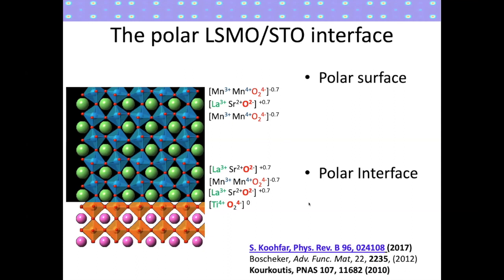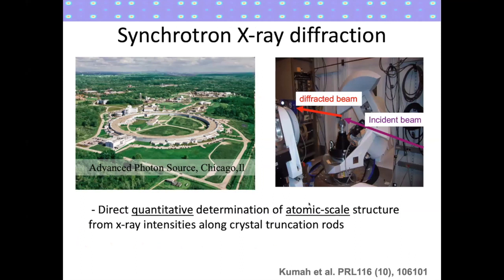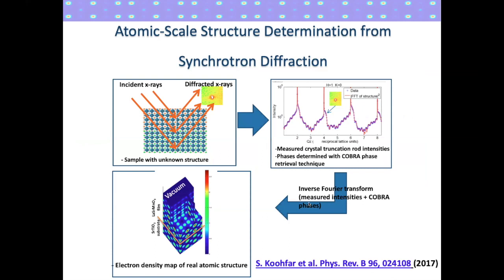We'd like to figure out if there's a structural change in these films as a function of thickness, and look at the effect of polarity on the crystal structure and relate that to magnetic transitions. LSMO in the ionic limit is itself a polar material — at 30% strontium doping, you have alternating ±0.7 charges, giving a polar interface and polar surface. To determine the structures, we take them to the synchrotron — specifically the Advanced Photon Source at Argonne National Lab — where we measure the diffraction intensities along crystal truncation rods in three dimensions.